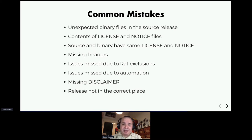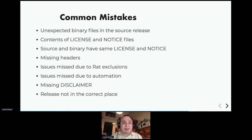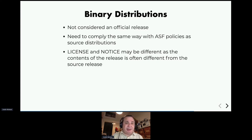Some common mistakes: unexpected binary files in the source release is generally the most common; contents of the license and notice files being incorrect; missing headers; missing disclaimer, which is fairly rare; and releases not being put in the right place, which is less common these days. Binary distributions are not considered official releases, but you can make a binary distribution from a source release and it still needs to comply with ASF policies. The license and notice may be different for your binary release, and it often has more dependencies included, meaning more things need to be added to the license and notice.